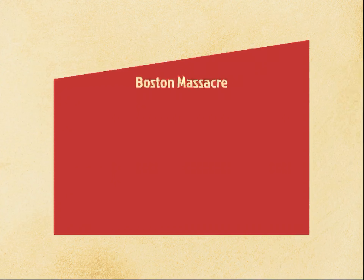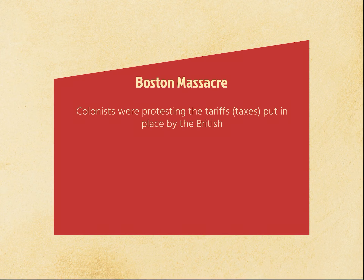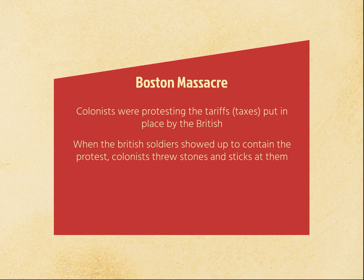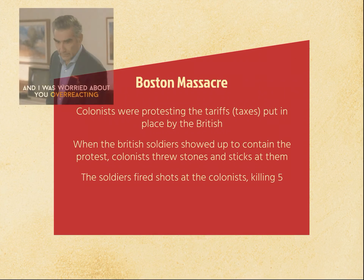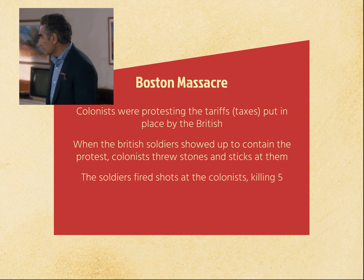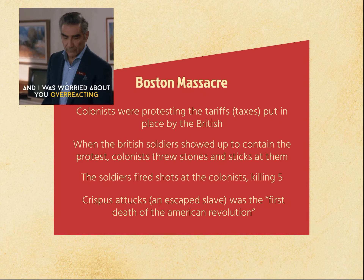Star question — the Boston Massacre. The colonists were protesting more tariffs or taxes placed by the British Parliament when the soldiers decided to show up to contain the protest. Some reports say the colonists were throwing snowballs; some say sticks and stones. If you're a loyalist, you'll say it was sticks and stones. If you're for the colonists, you'll say it was just snowballs. Then these soldiers decided to kill five colonists, and Crispus Attucks, an escaped slave, becomes the first death of the American Revolution because he was at this protest.